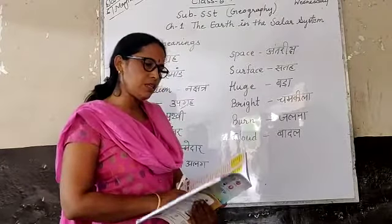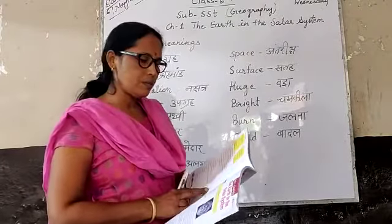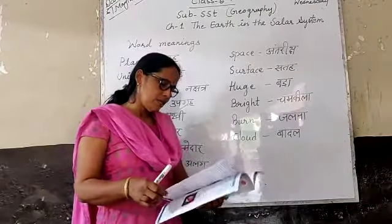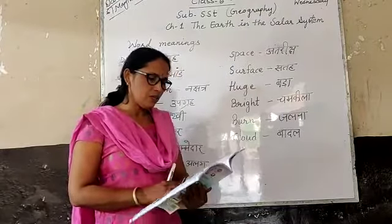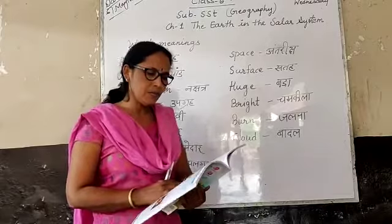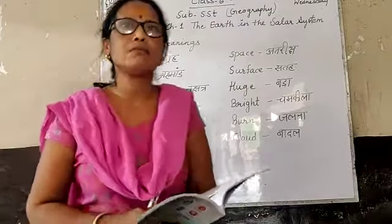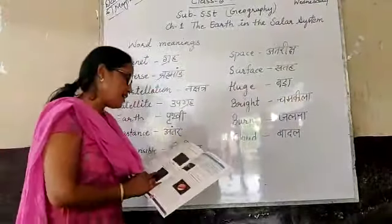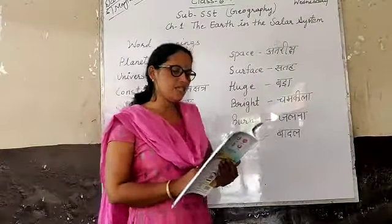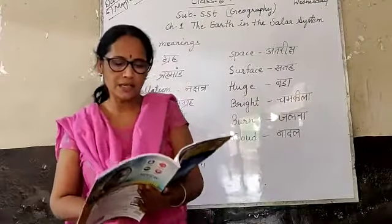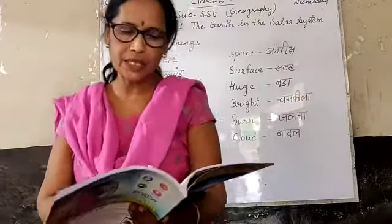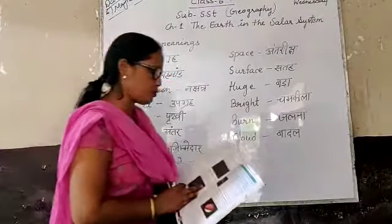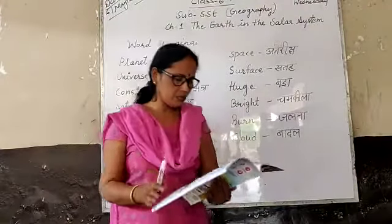This chapter is The Earth in the Solar System. How many planets do we have? Pluto is no longer counted. The rest are Mercury, Venus, Earth, Mars, Jupiter, Saturn, Uranus, and Neptune.